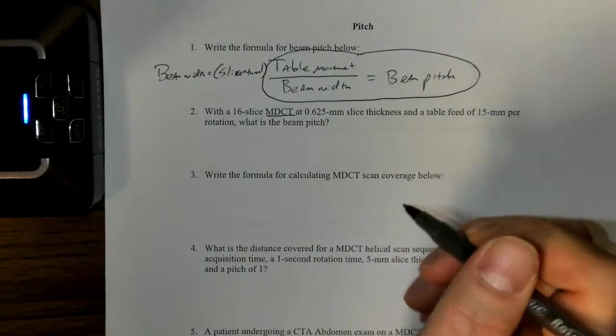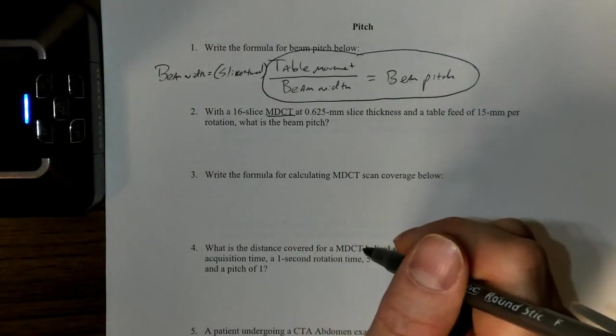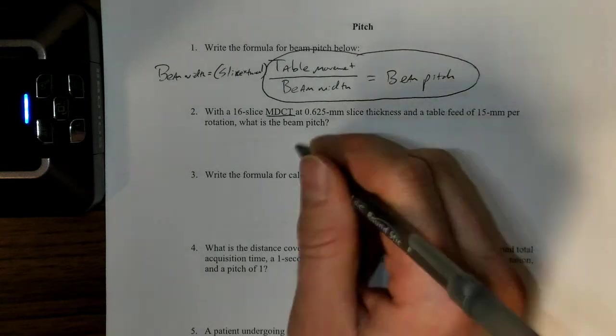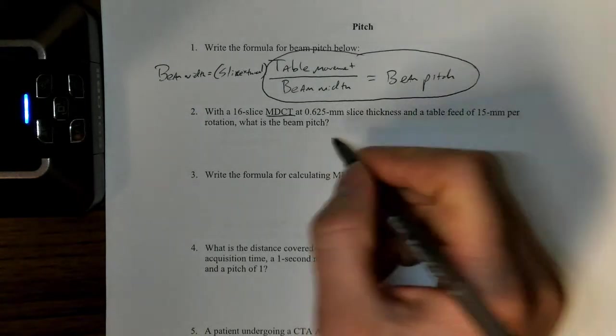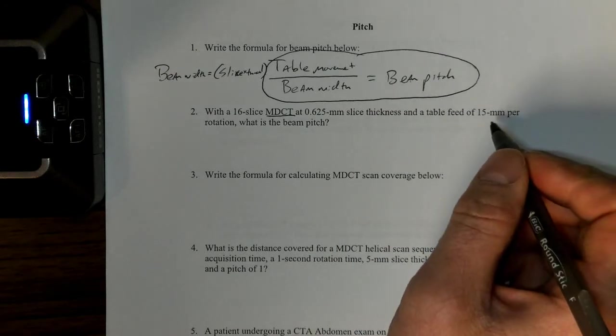We pretty much just call it CT now; we don't really use single detector anymore. But it specifies multi-detector CT scanner using that slice thickness and a table feed of 15 millimeters per rotation. What is the beam pitch?